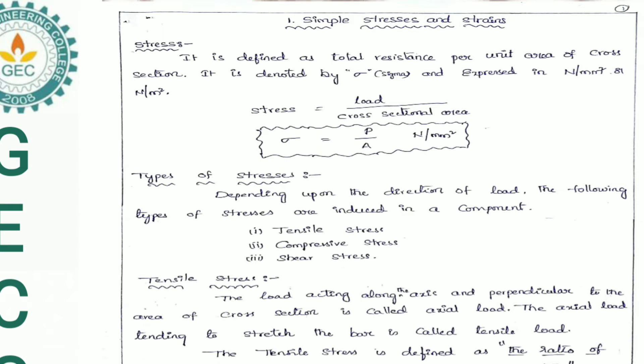Now, how many types of stresses are there? Depending upon the direction of load, the following types of stresses are induced in a component. First one: Tensile Stress. Second one: Compressive Stress. Third one: Shear Stress.